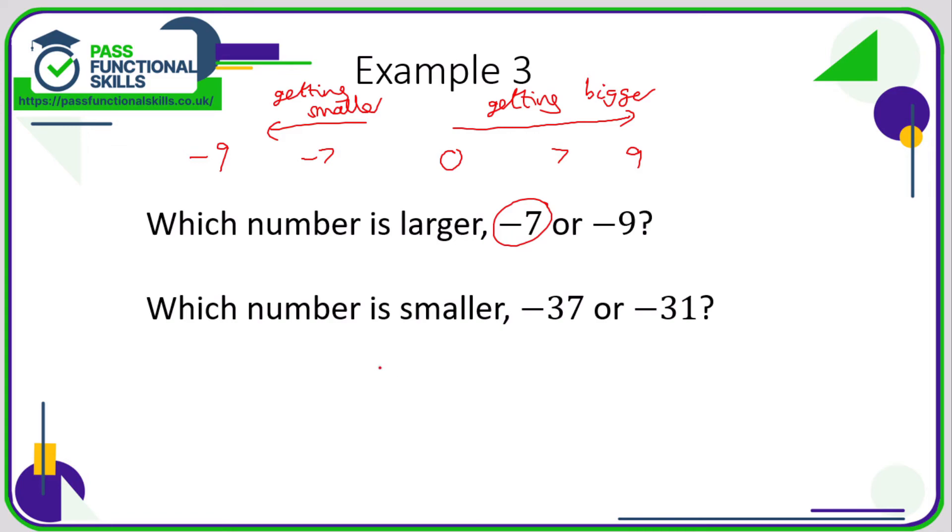Which number is smaller, -37 or -31? Well, let's do our number line again. So 0, positive 31 and positive 37. So therefore -31, -37. We know we're getting smaller as we're going to the left. So which of the two numbers is more to the left? It's -37.